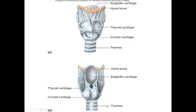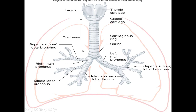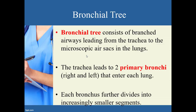Going back to this image, you can see the trachea and clearly see the individual C-shaped rings of hyaline cartilage. This other image shows the larynx with the thyroid cartilage — which forms the Adam's apple in males — and the trachea with its individual rings of hyaline cartilage.